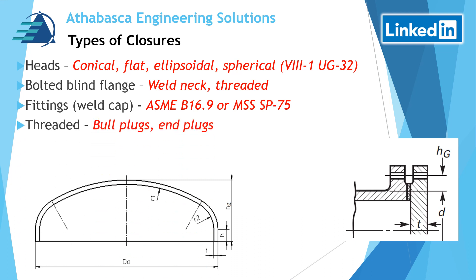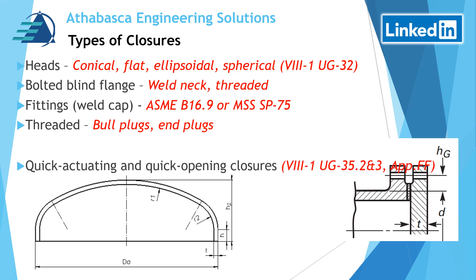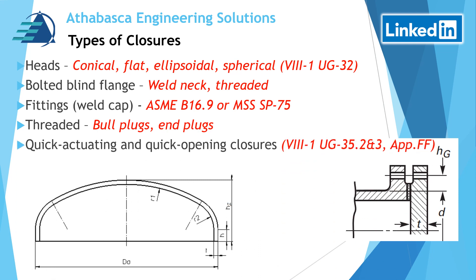Next, we have threaded plugs. And lastly, the Boiler Pressure Vessel Code ASME Section Eight, Division One breaks closures into two categories of quick actuating, found in UG35.2, and quick opening, found in UG35.3. It also mentions that documentation is required for those types of closures, and the quick opening closures guidance is found in Appendix FF.